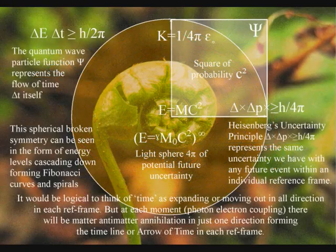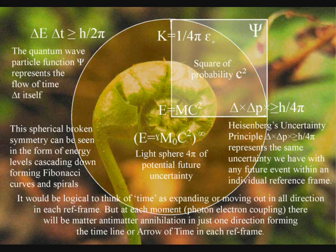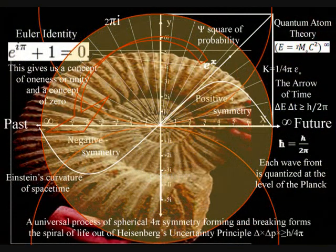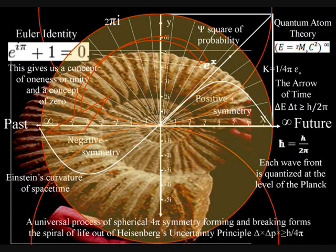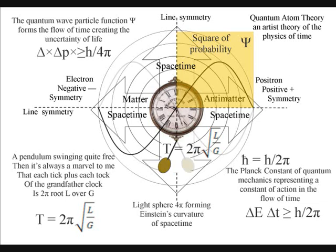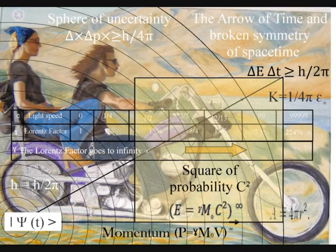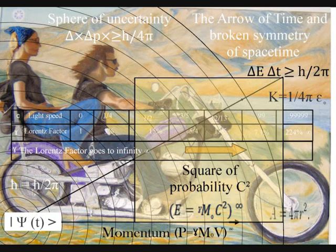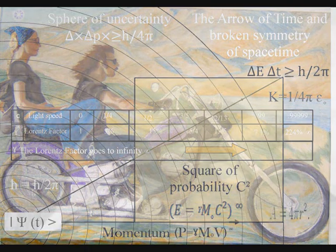But above all, we see and feel this process as the flow of time itself. Time is continuously being formed photon by photon by photon, by the spontaneous absorption and emission of light waves of electromagnetic radiation, a process of continuous change, continuous energy exchange forming the future uncertainty of everyday life.